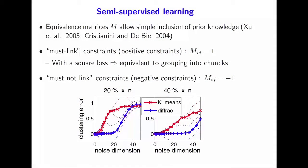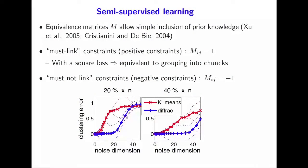The reason I really like this framework is that you can add extra constraints. If you know a bit about your problem — this has been known in semi-supervised learning — dealing with equivalence metrics with a bunch of 1s and minus 1s: if you know two points are together, you force entry ij to be 1; if you know the points are in different clusters, you force the matrix to be minus 1. All of this is convex, so we can run almost the exact same algorithm, and now we get something which can do semi-supervised learning.